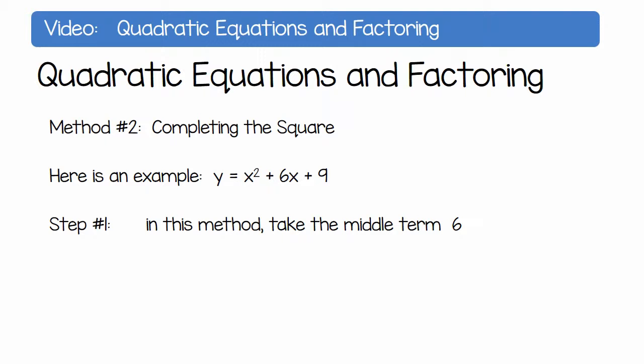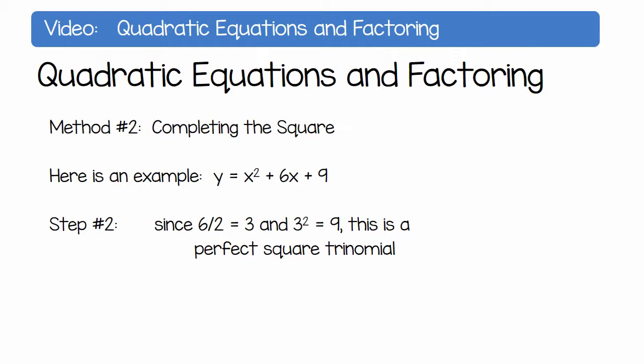Step number 1. In this method, take the middle term 6, divide 6 by 2, and you will get 3. Square the 3 and you will get 9. Since 6 divided by 2 is 3 and 3 squared is 9, this is called a perfect square trinomial. The factors are x plus 3 times x plus 3, which can be written as x plus 3 squared.